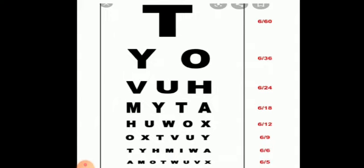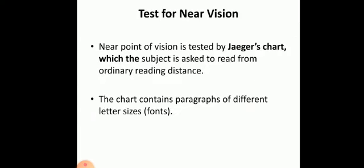The subject is asked to read the Snellen's chart with each eye separately from a distance of 6 meters. The number denoting the lowest row the subject is able to read is noted. Visual acuity is calculated using the formula d/D, where d is the distance at which the letters are read and D is the distance at which letters can be read by a normal eye. The normal visual acuity is 6/6 for each eye. Visual acuity of 6/5 is called supernormal.